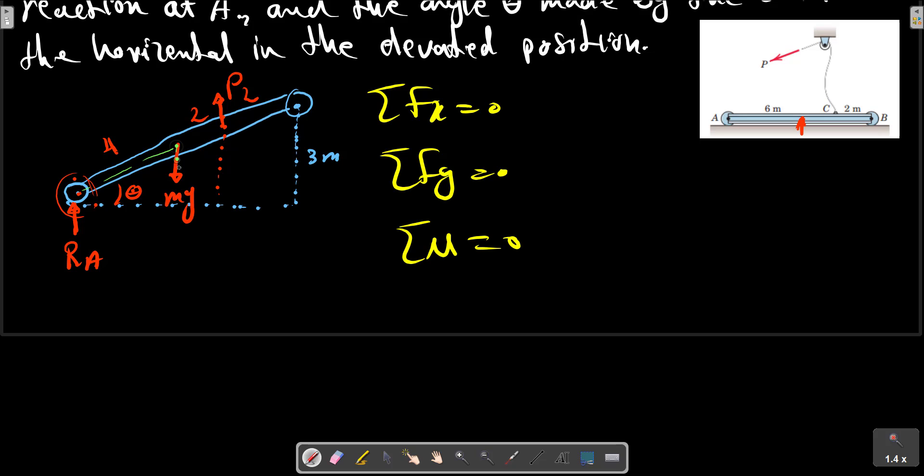This distance is 4, and the normal distance, if we use the concept of transmissibility of forces, we can make the transmissibility force. The normal distance for sigma M_A equals Mg multiply by 4 multiply by cos theta, plus P multiply by the normal distance which is 6 multiply by cos theta, equals 0.